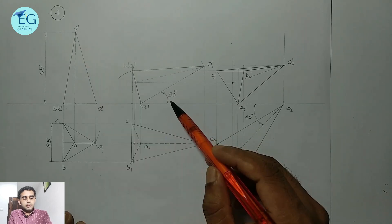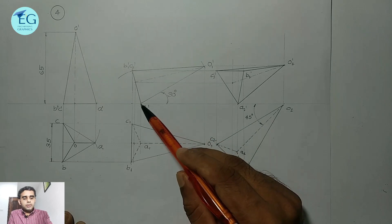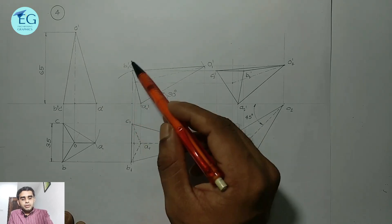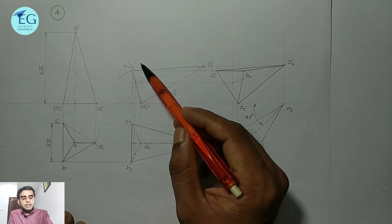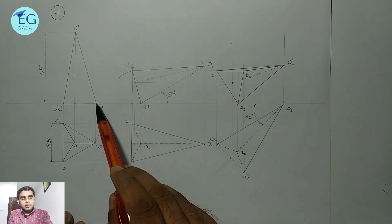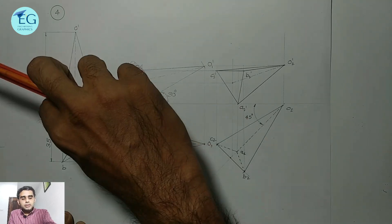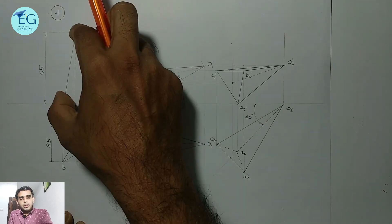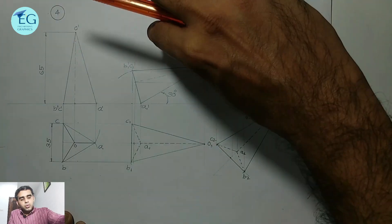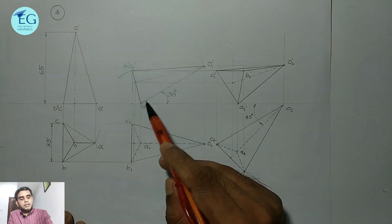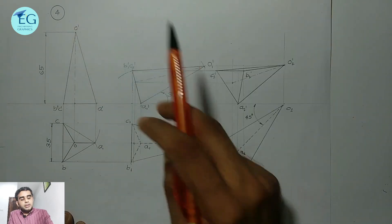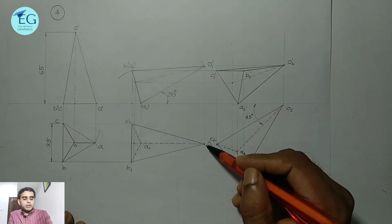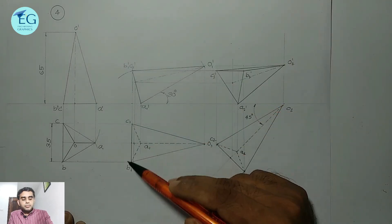A-O' is 30 degrees. Mark point A1 dash at 30 degrees. The top view includes points O, A, C, and B.